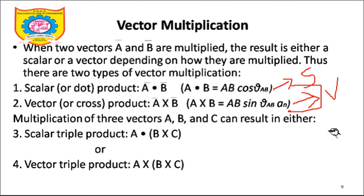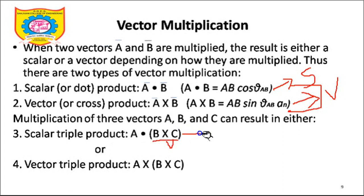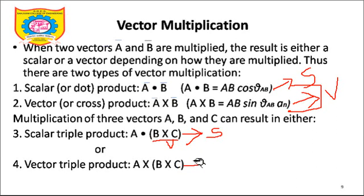Whatever result we get from the cross product will be in vector form. Now, scalar triple product: A̅ dot (B̅ cross C̅). This cross product will result in a certain vector, and vector dot vector results in a scalar. So scalar triple product will result in a scalar. Similarly, vector triple product — B̅ cross C̅ will result in a vector, and vector cross vector is once again a vector.